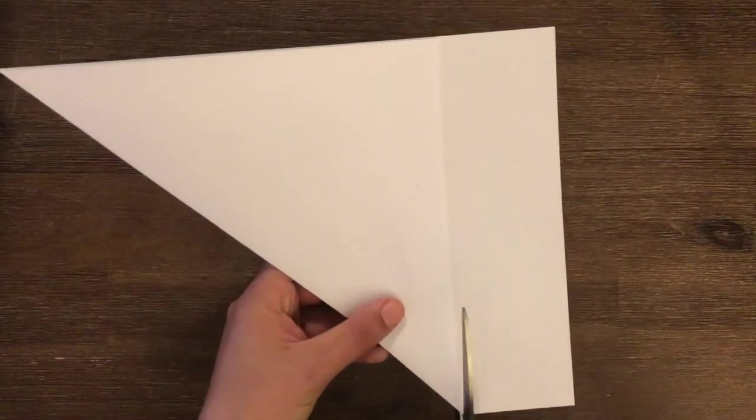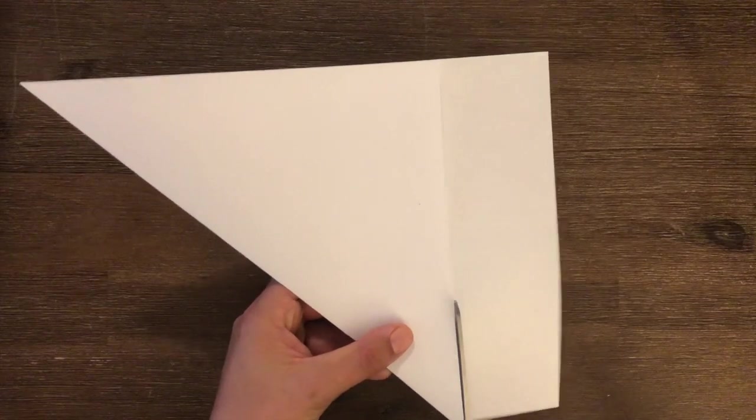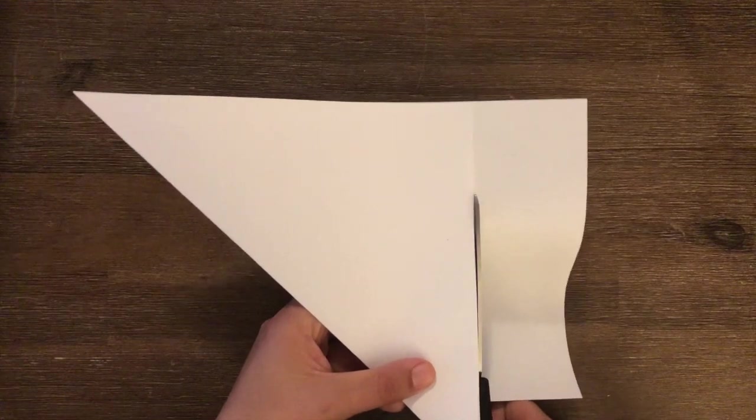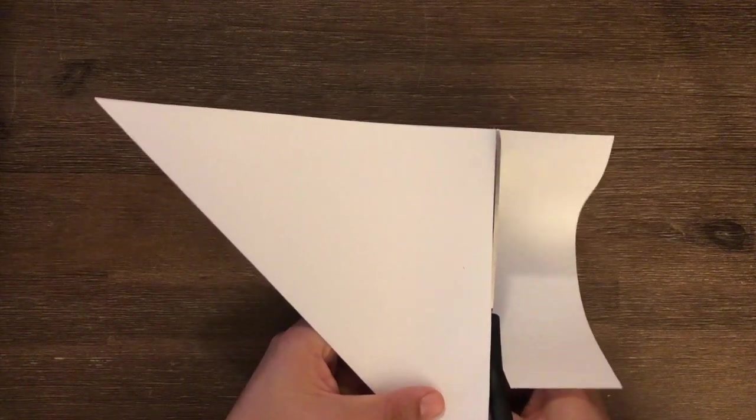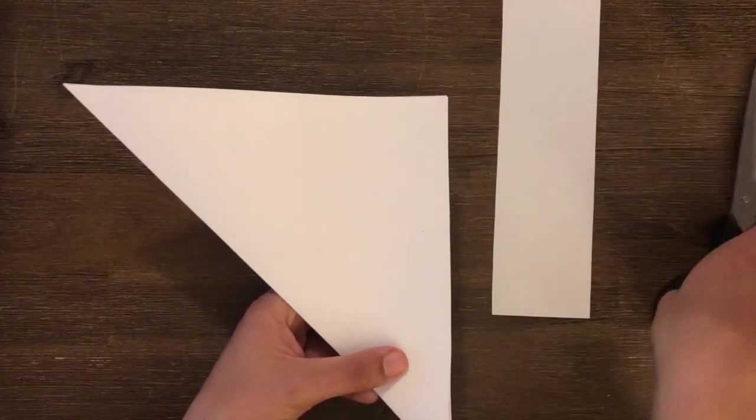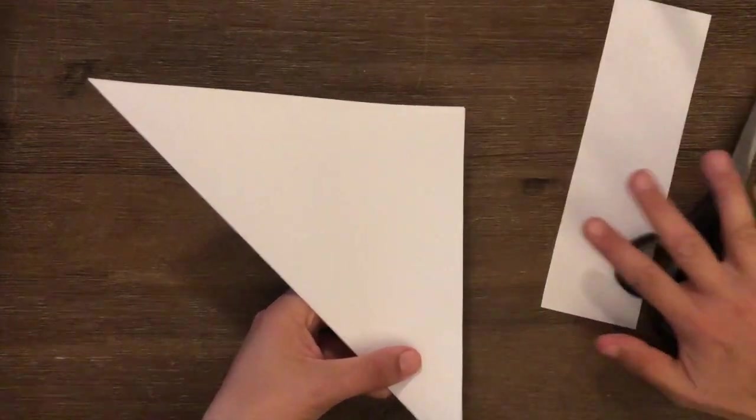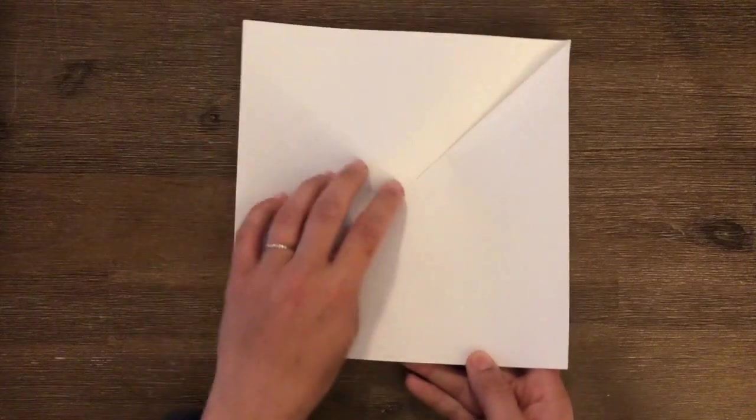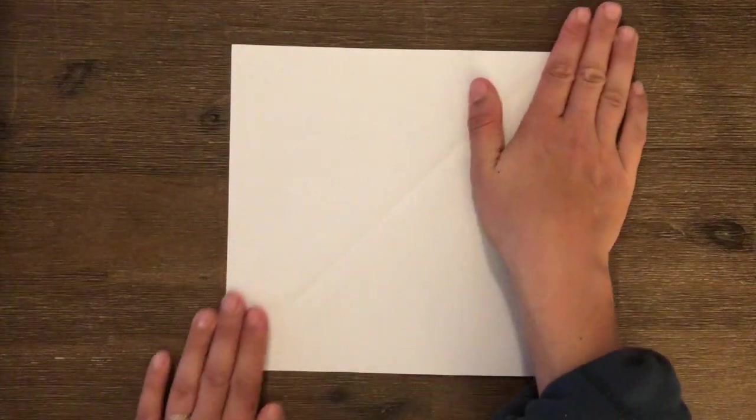So I'm going to take my scissors and I'm going to cut all along the edge of the triangle to cut off this piece of paper. So this we don't need anymore, and we don't need our scissors anymore. Now if we open up our triangle, we're going to end up with our nice square.